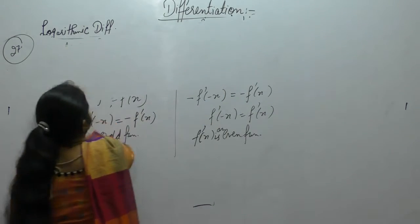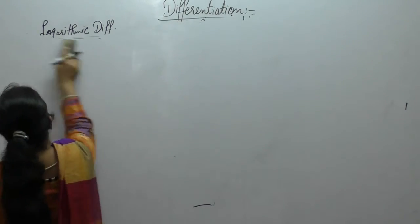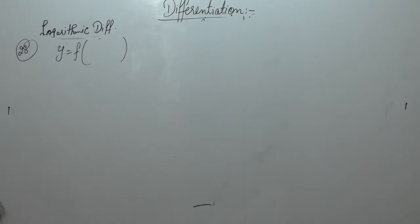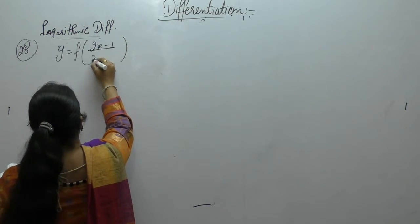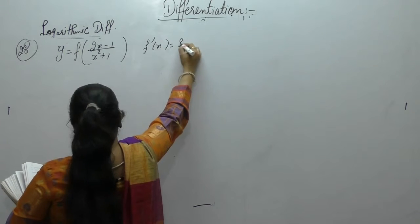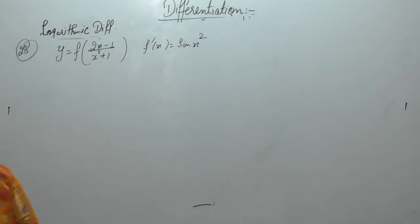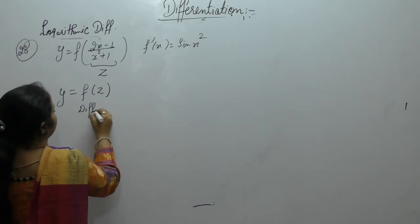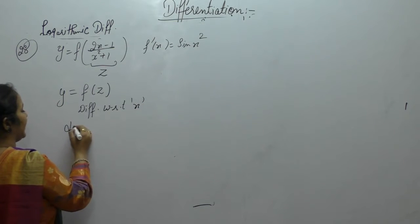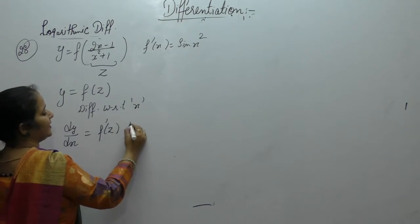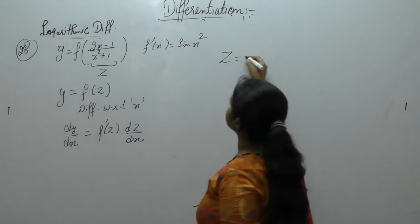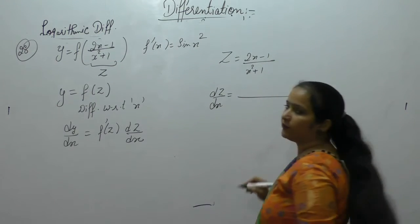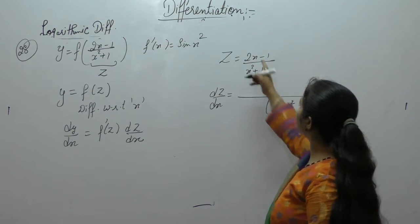Now the next problem. If y = f((2x-1)/(x²+1)) and f'(x) = sin(x²), find dy/dx. Let z = (2x-1)/(x²+1), so y = f(z). Differentiate with respect to x: dy/dx = f'(z)·dz/dx.